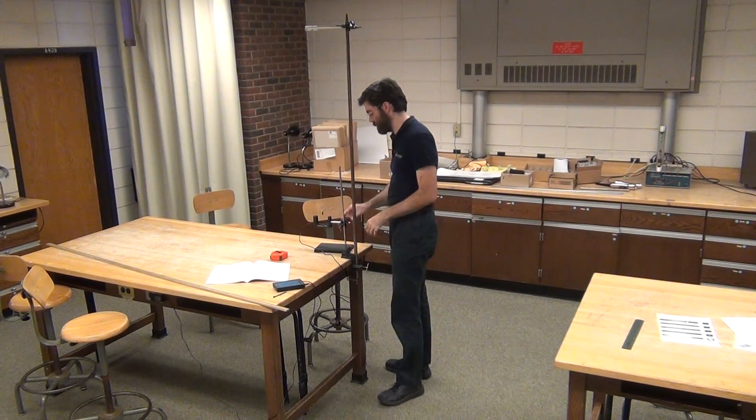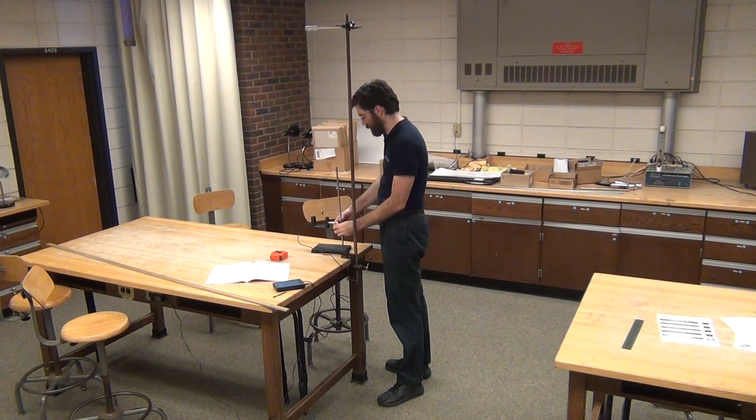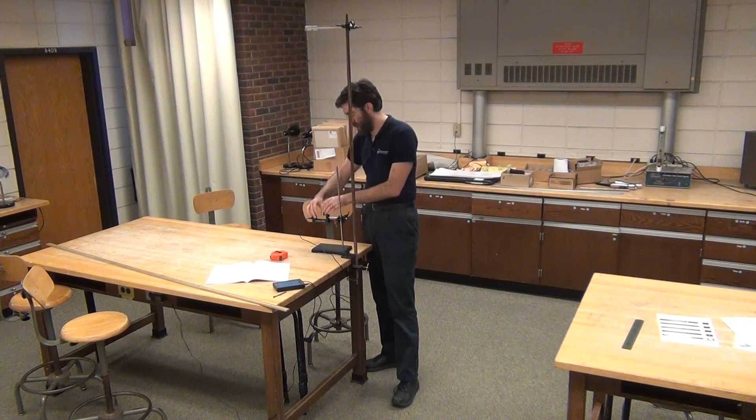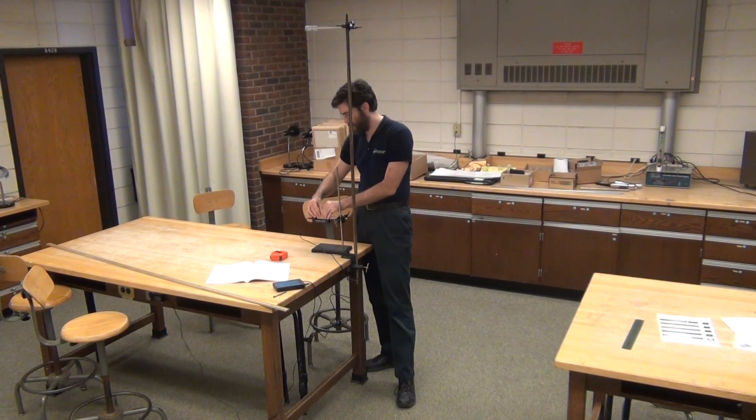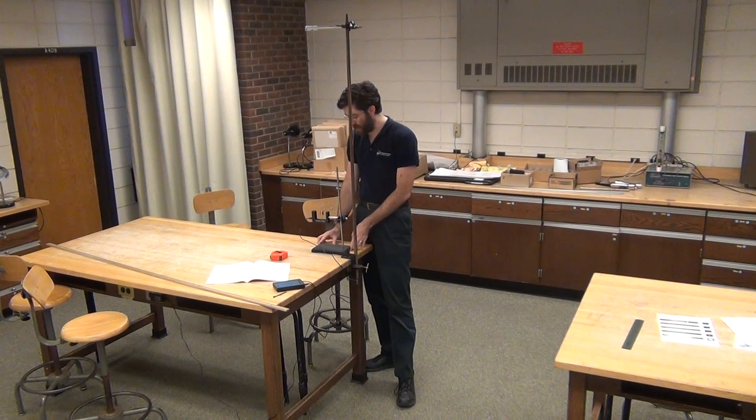On the table you might have to adjust the height of the photogate. Again, the stationary pendulum should be blocking the beam.